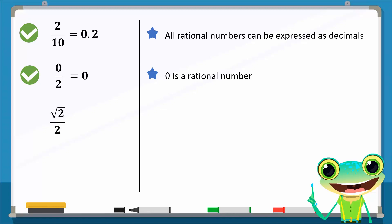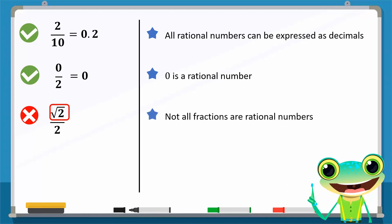√2/2 is not a rational number because the numerator is not an integer. Rational numbers can be expressed as fractions, but not all fractions are rational numbers. √2/2 is a fraction, but it is not a rational number.